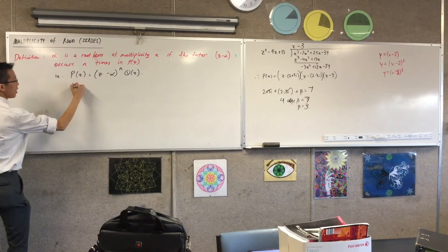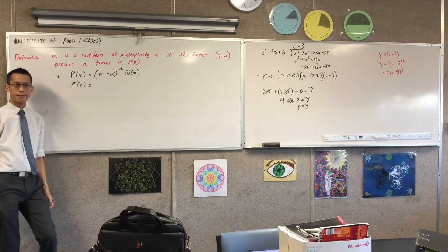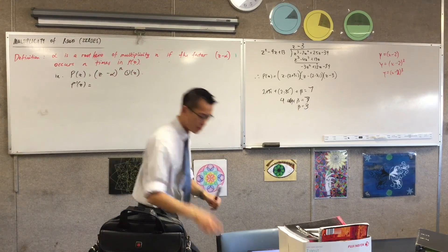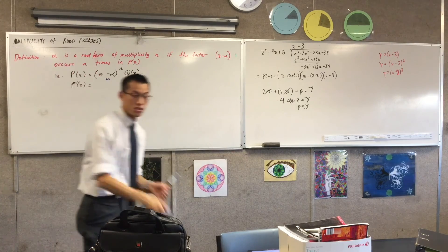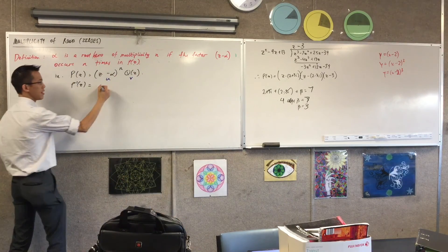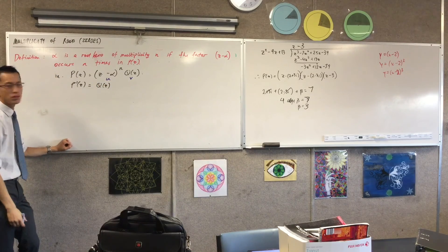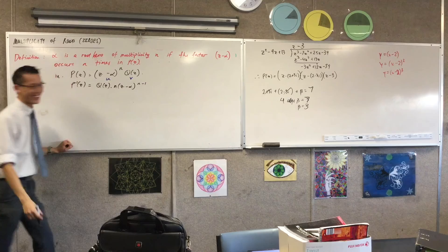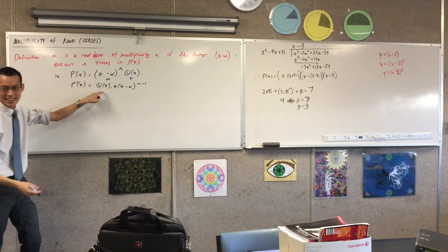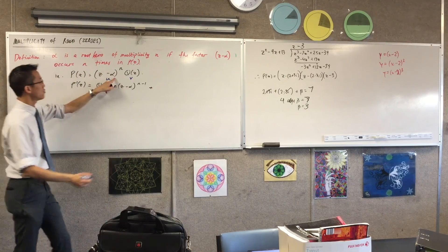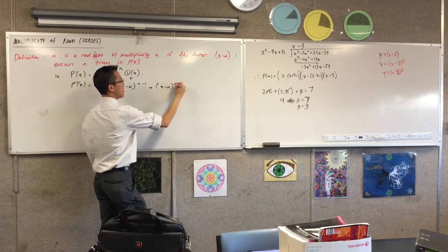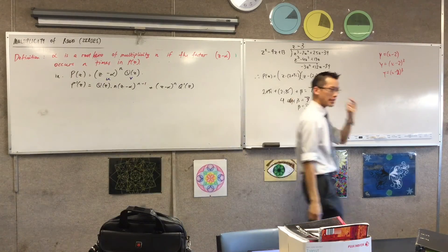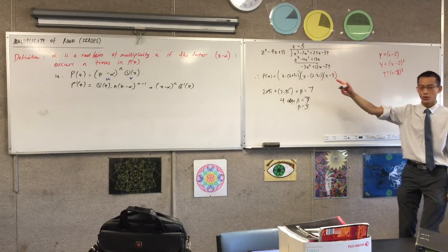What do we know about the derivative? It's just a product — there's a product rule and chain rule in it, but it's not complicated. If we call (z minus alpha)^n as u and q(z) as v, and go ahead and differentiate, we get v times u-dash. What's u-dash in this context? It gives us n times (z minus alpha)^(n-1). So there's my v and my u-dash, plus u times v-dash, which I'll call q-dash. Information should jump out at you.